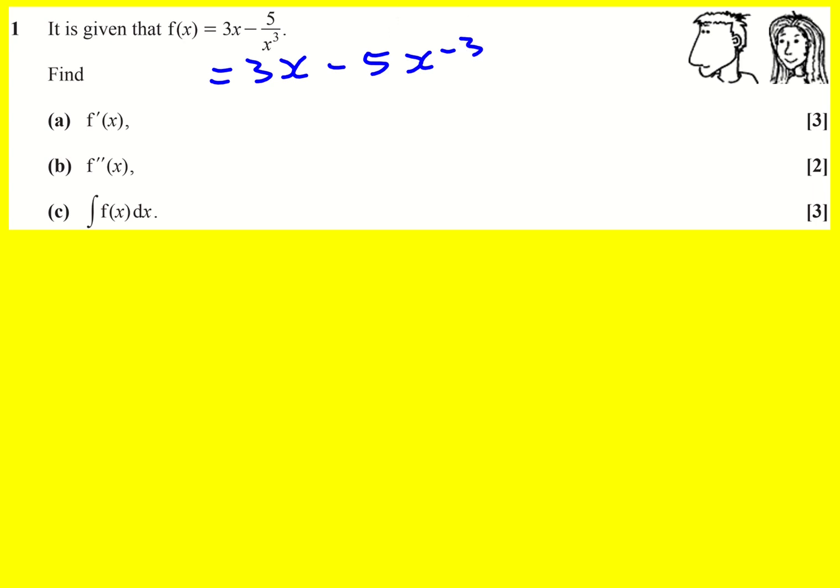Now it's ready to differentiate because we know that d by dx of x to the n is equal to n x to the n minus 1. That's a key rule to learn, and hopefully you've seen where this has come from and you've differentiated x squared from first principles, for example.